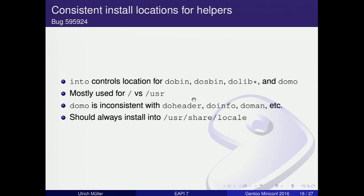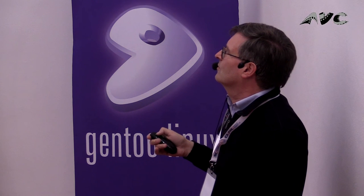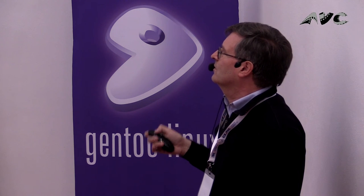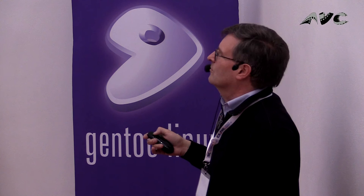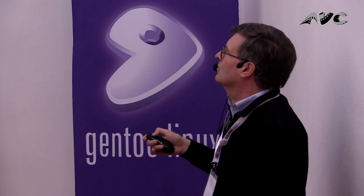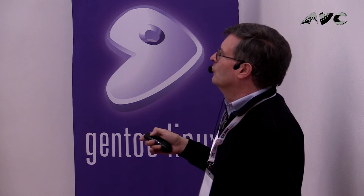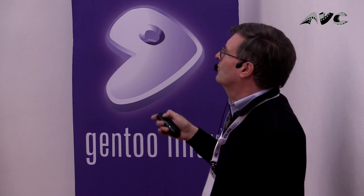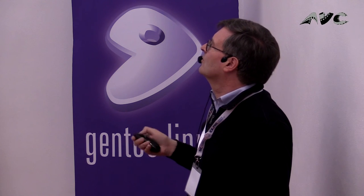Consistent install locations — this was brought up by mgorny recently. The into function controls the location for dobin, dosbin, dolib, and domo. But why domo? It's mostly used for root directory versus usr directory, and there's no /usr/share involved. So why should into affect domo? Instead, just let domo install into /usr/share/locale. It's really inconsistent to have it tied to the into function.